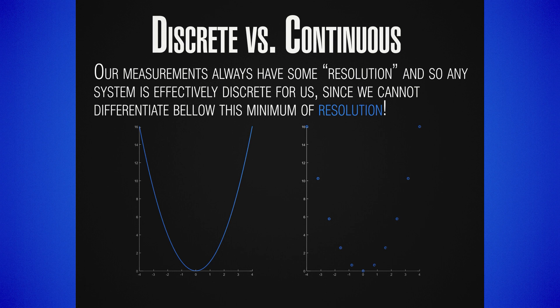Any machine would have a limit below which it cannot differentiate between values. For example, if you had a receiving antenna registering the electromagnetic field by measuring the volts, what you're going to get is some thresholds below which it would not be able to differentiate. If you have a sensor sensitive to a few nanovolts and picovolts were coming in, you could not detect that — even if there were oscillations or information below this threshold, you would never measure it.